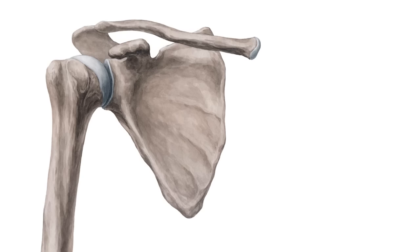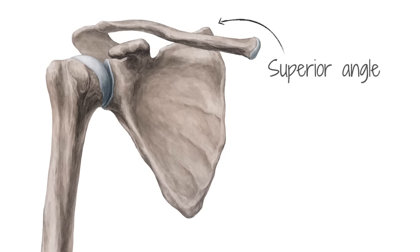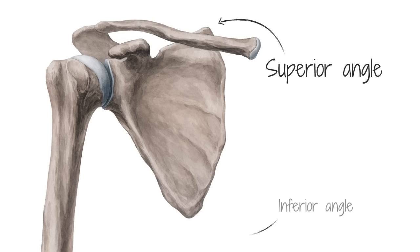In this short tutorial we will list the anatomical features of the scapula. First, the angles: the superior angle and the inferior angle.